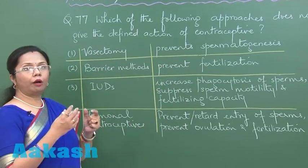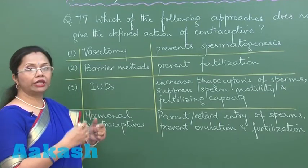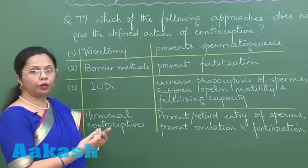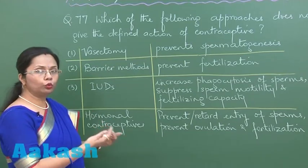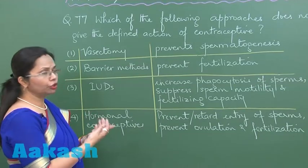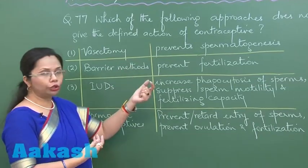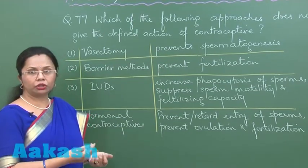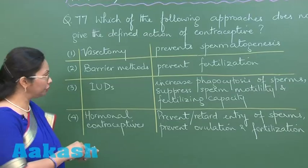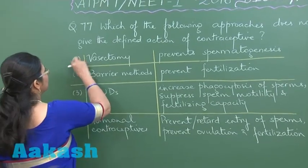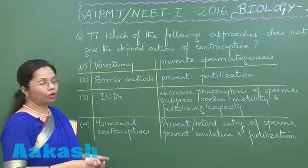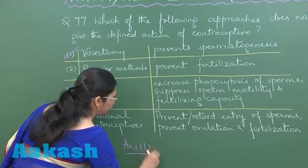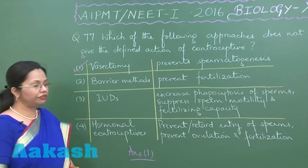Vasectomy, where a part of the vas deferens is cut and ligated, prevents the transport of sperms from the testes to the outside via the ejaculatory duct. It has nothing to do with preventing spermatogenesis — spermatogenesis is going on normally even after vasectomy. So this is the incorrect statement about this contraceptive method, and hence our answer is 1. Let's move on to question 78.